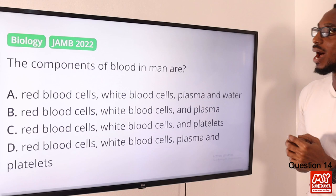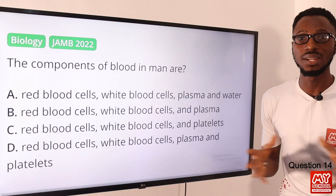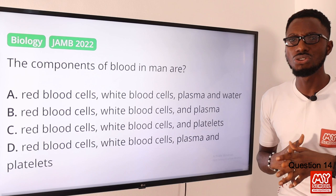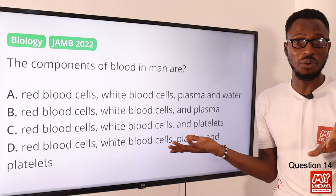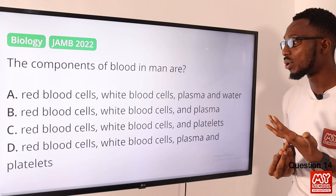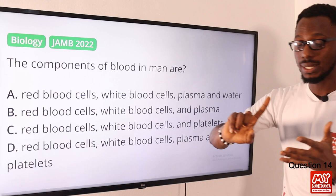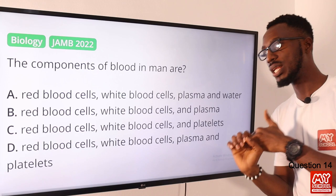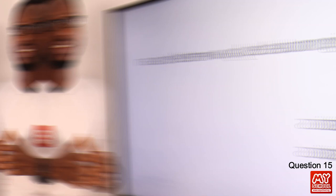Question fourteen: the components of blood in man are what? Blood transports nutrients, hormones, and helps regulate body temperature. The solid components include red blood cells, white blood cells, and platelets. The liquid component is plasma. Option D correctly lists the red blood cells, white blood cells, platelets, and plasma. The correct option is option D.